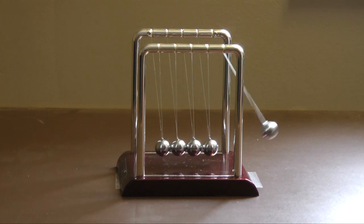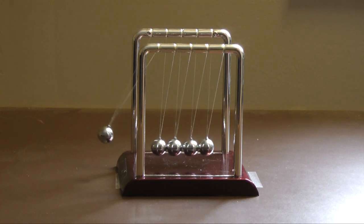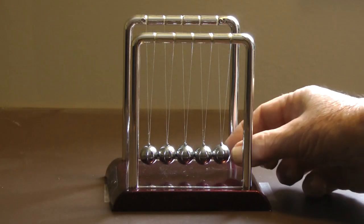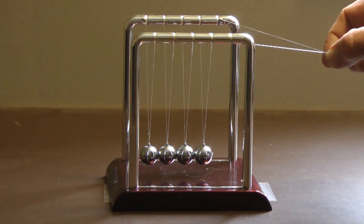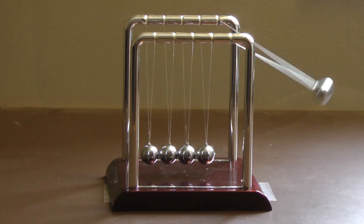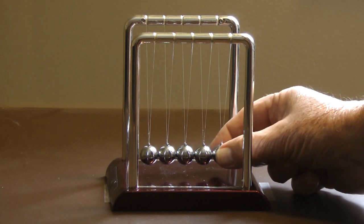I mentioned that there is something odd about the behavior of this system. Why is only the single end sphere displaced from the row, particularly on the first strike? Why not two spheres or all of them?